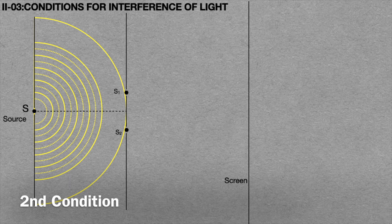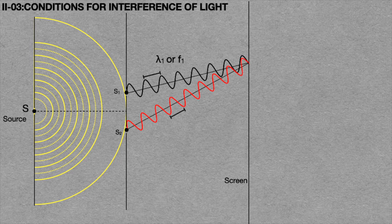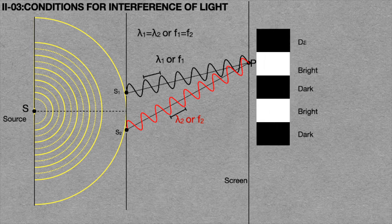The second condition is shown in this animation. Consider the light wave emerging from light source S1 having wavelength lambda 1 or frequency F1, and the light wave emerging from light source S2 having wavelength lambda 2 or frequency F2. If these two waves are superposed and form an interference pattern at point P, then it must satisfy the condition: lambda 1 equals lambda 2, or F1 equals F2. Then only a stable interference pattern is formed.